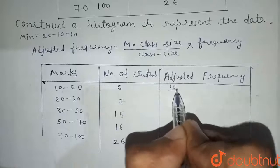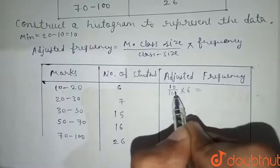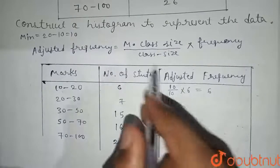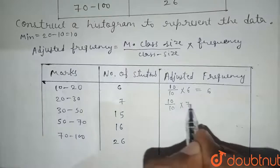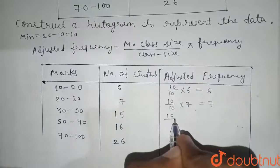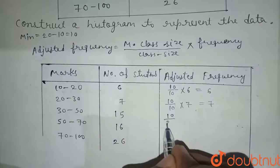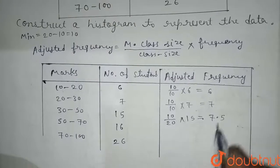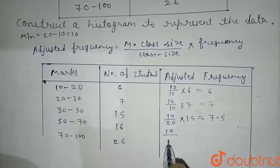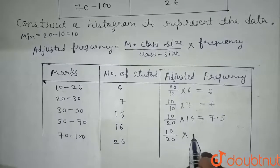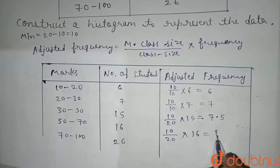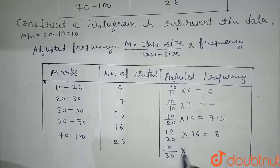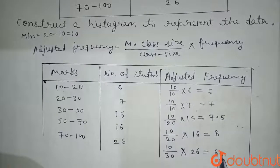For the first interval 10–20: minimum class size 10 divided by class size 10, multiplied by frequency 6, gives 6. For 20–30: 10/10 × 7 = 7. For 30–50: class size is 20, so 10/20 × 15 = 7.5. For 50–70: 10/20 × 16 = 8. For 70–100: class size is 30, so 10/30 × 26 = 8.67.